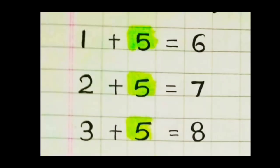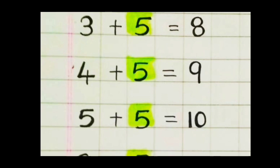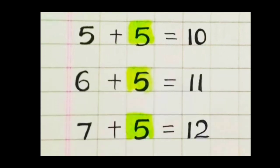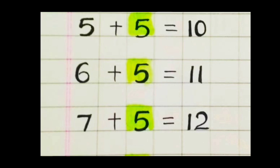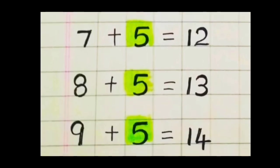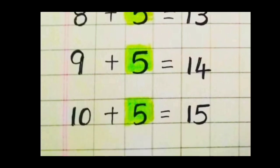Repeat once again. One plus five is six. Two plus five is seven. Three plus five is eight. Four plus five is nine. Five plus five is ten. Six plus five is eleven. Seven plus five is twelve. Eight plus five is thirteen. Nine plus five is fourteen. Ten plus five is fifteen.